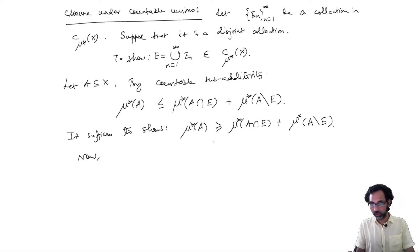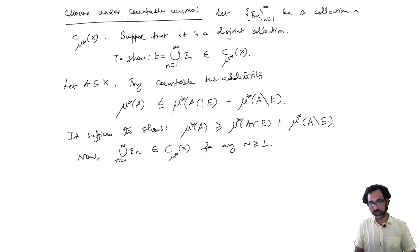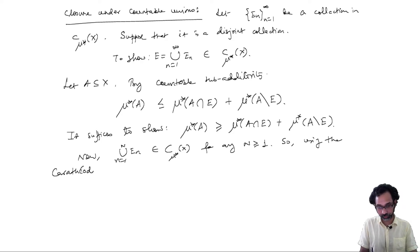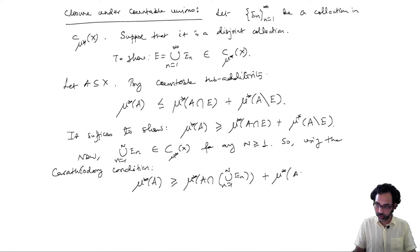To show this, we know that any finite union of E_n's belongs to C(μ*, X) for any capital N ≥ 1, by closure under finite unions. Using the Carathéodory condition, we get that μ*(A) is greater than or equal to μ*(A ∩ (union n=1 to N of E_n)) plus μ*(A \ (union n=1 to N of E_n)).